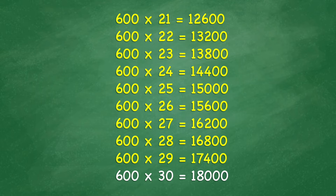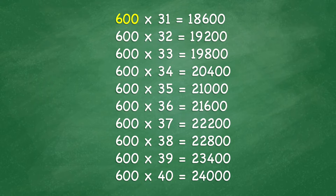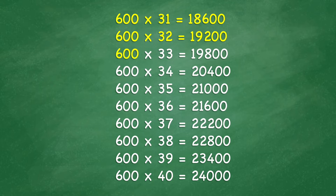600 x 30 equals 18,000. 600 x 31 equals 18,600. 600 x 32 equals 19,200. 600 x 33 equals 19,800.